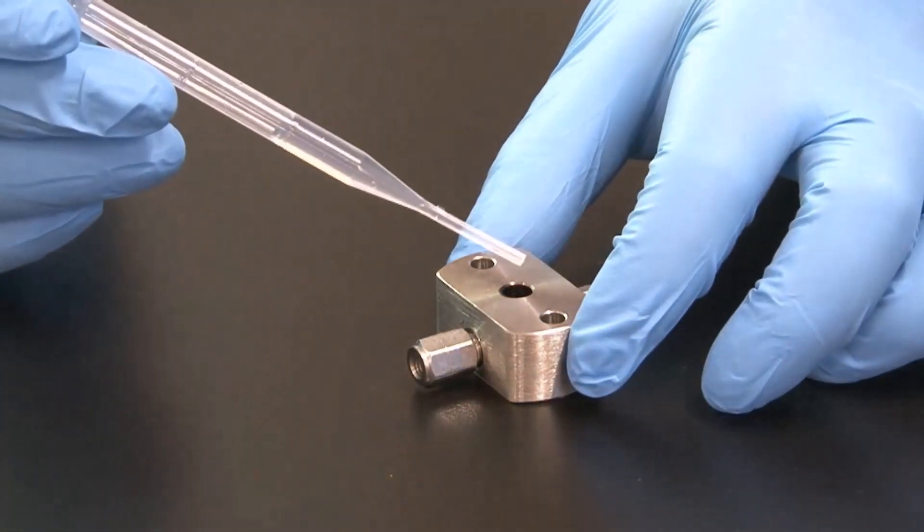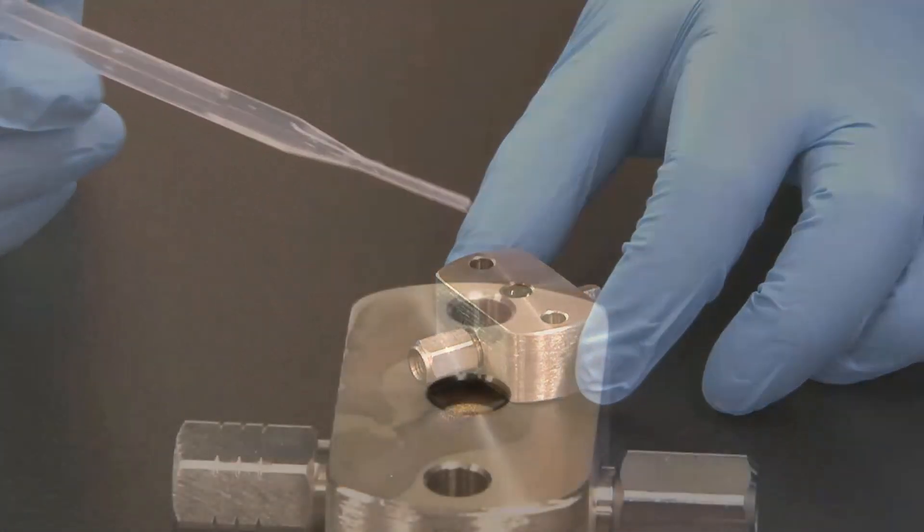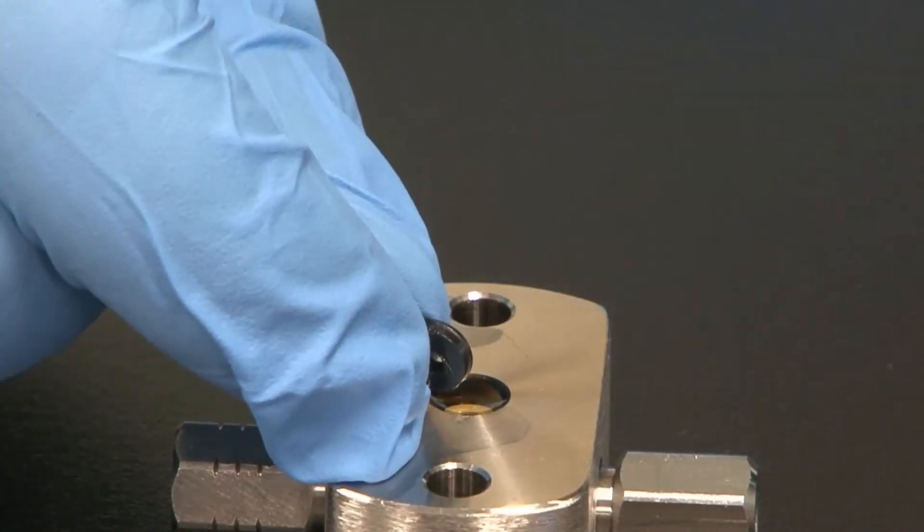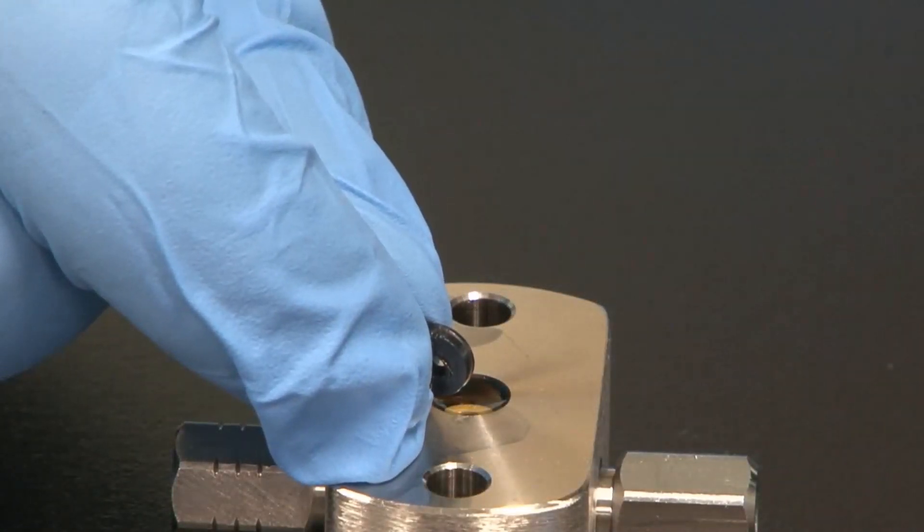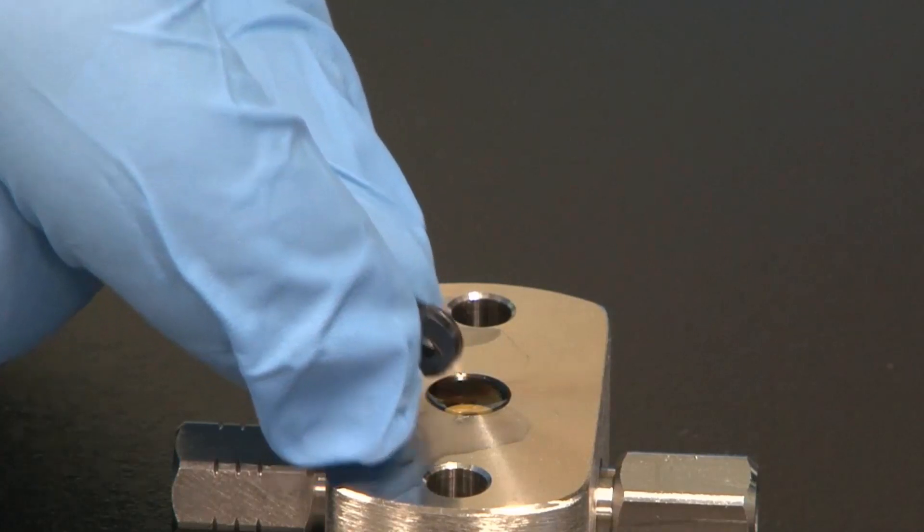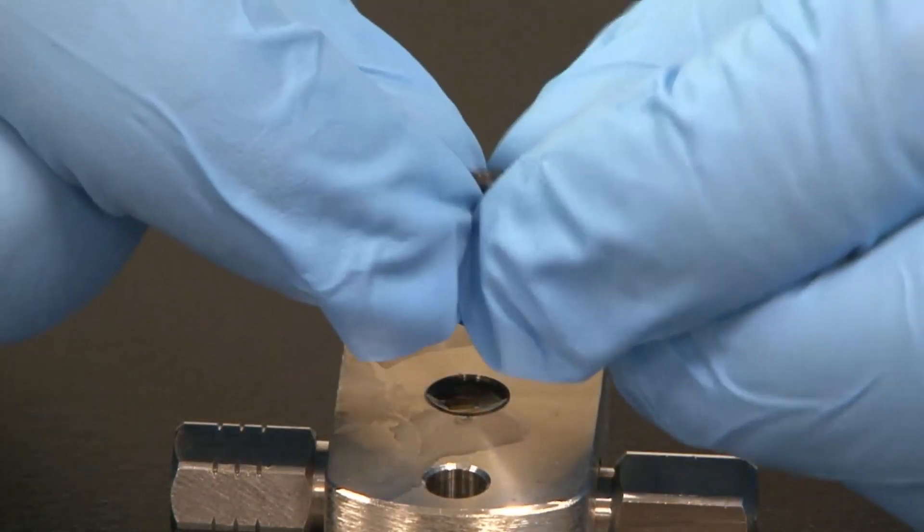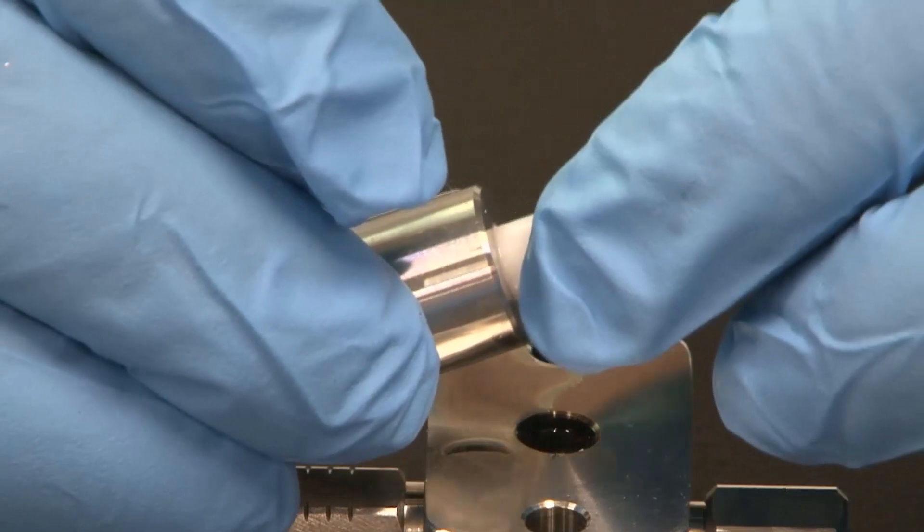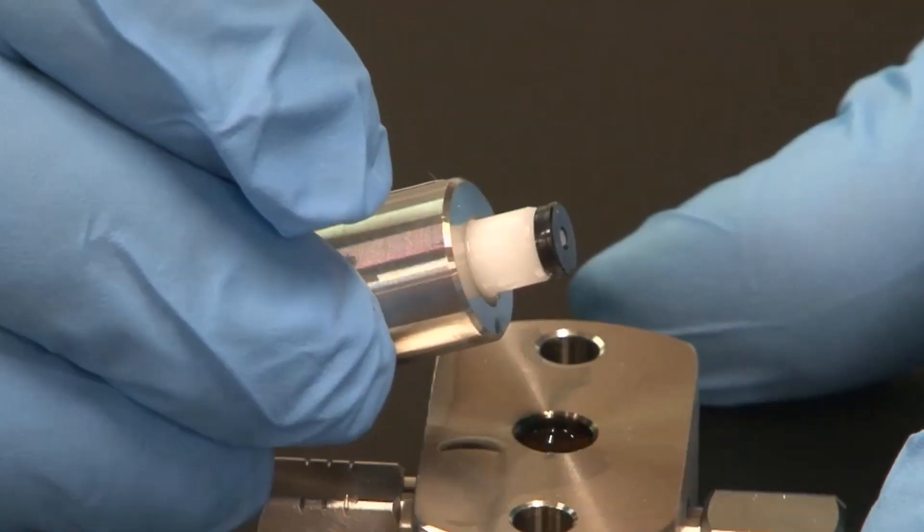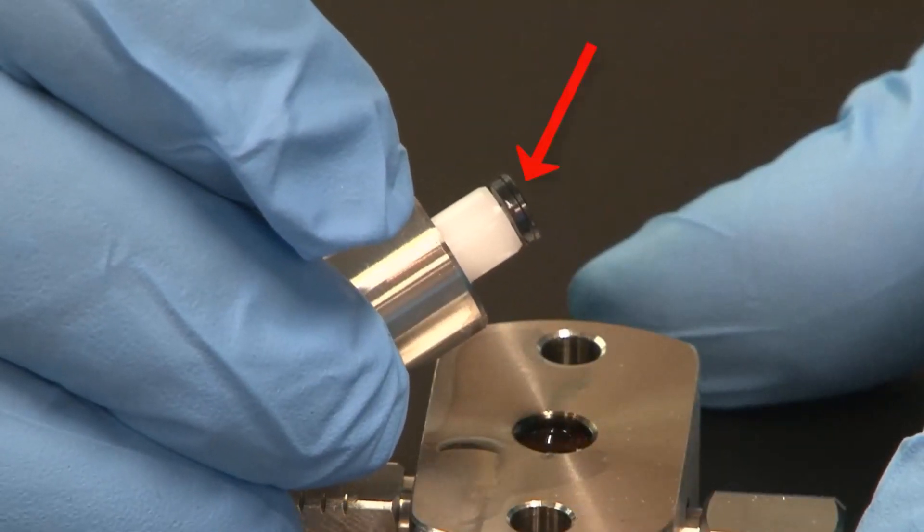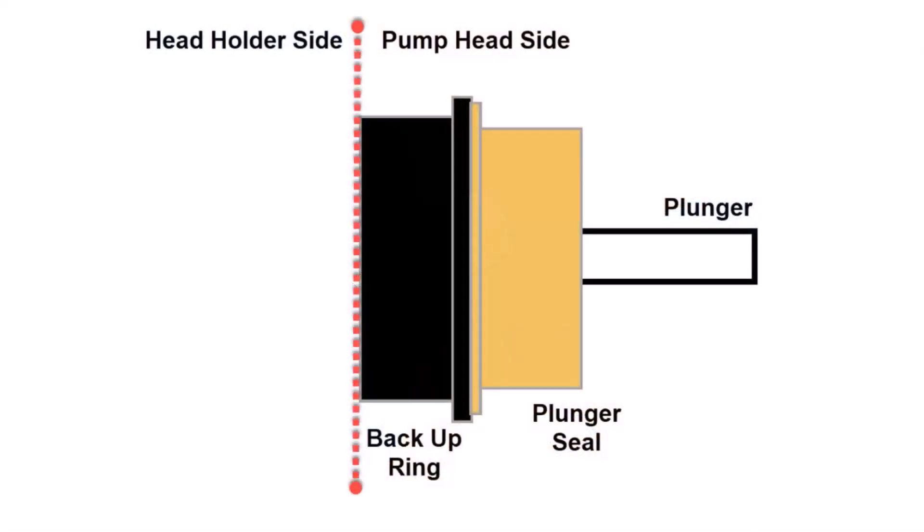Lubricate the pump head cavity with isopropanol. When installing the backup ring, note the orientation of the ridge. Place the ring in the tool with the ridge facing away from the tool. This diagram shows the correct seal and backup ring orientation.